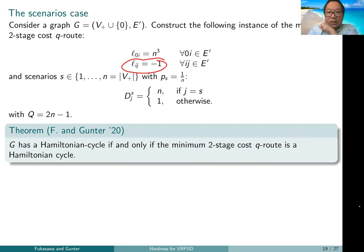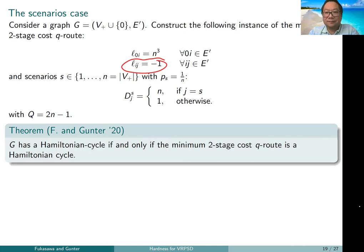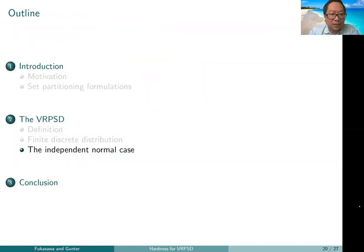That's the proof for the scenario case, showing strong NP-hardness of the minimum two-stage cost Q-route problem under finite discrete distributions.